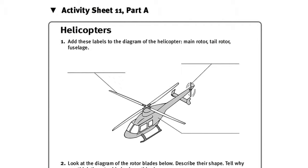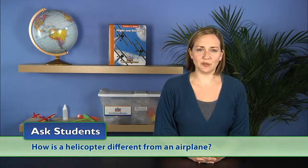Next, distribute Activity Sheet 11, Part A to each student and bring their attention to the diagram of the helicopter at the top of the page. Review the parts of a helicopter with students by asking, How is a helicopter different from an airplane?